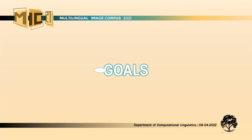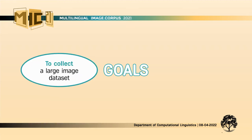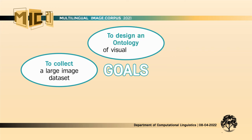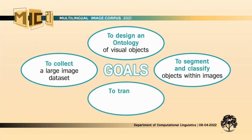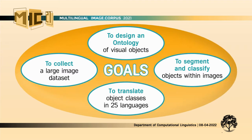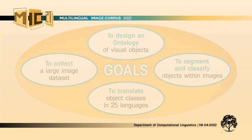The main goal of the project Multilingual Image Corpus was to provide a large image dataset with annotated objects and multilingual descriptions in 25 languages. The main contributions are the provision of a large collection of high-quality copyright-free images, the formulation of an ontology of visual objects based on WordNet noun hierarchies, the precise manual correction of automatic image segmentation and annotation of object classes, and the association of objects and images with extended multilingual descriptions.